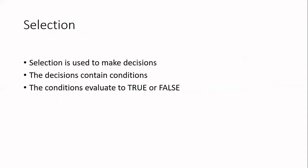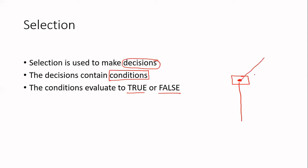When we are performing selection, there are decisions that are made. These decisions contain conditions, and the conditions evaluate to true and false. You're going to be moving in this direction, and you'll come up with a decision that has to be made — which will be a condition. Based on whether that condition is true, you will go that way. And if that condition is false, you will then go in that other direction.